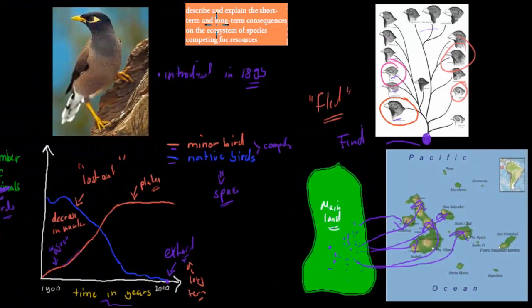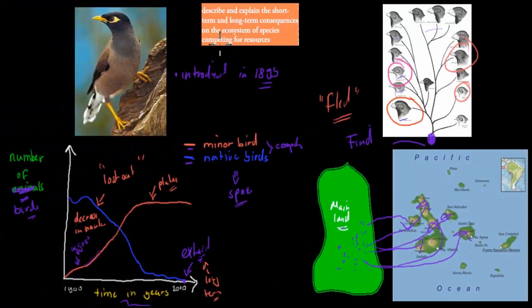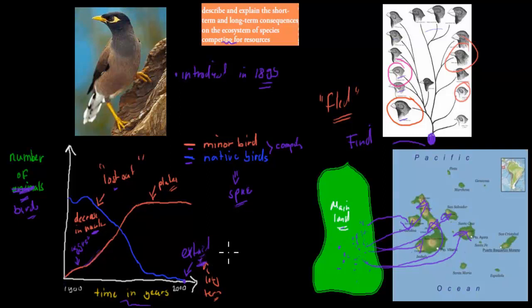So describe and explain the short-term and long-term consequences on the ecosystem of species competing for resources. If we have two species competing for resources, then generally the numbers will decrease, especially for the one that is not that well adapted. That's the short-term consequence. Then long-term consequence could be that they actually become extinct over a couple of hundred years and millions of years. Whereas what can also happen is if they want to compete, but they can't compete, they could flee. They could flee to neighboring areas. So they inhabit a new area. And then over time, they change into new species.